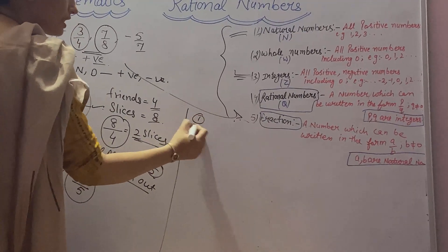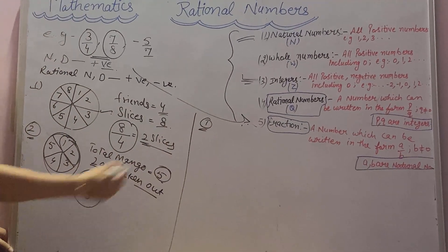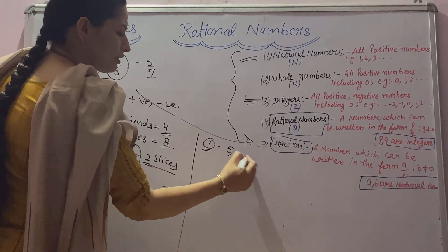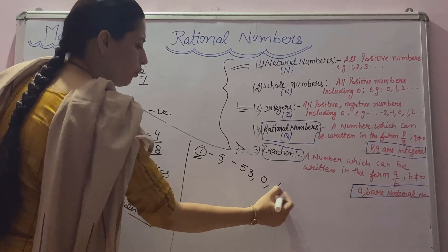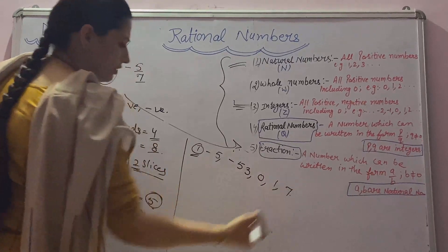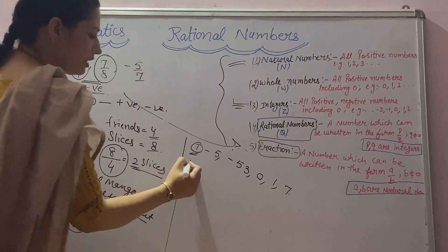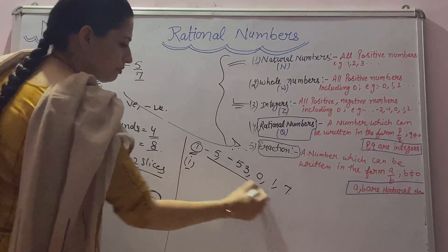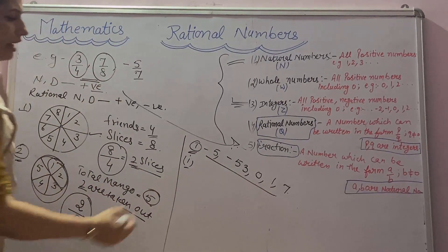Now I will give some exercises for your practice. First exercise: minus 5, minus 53, 0, 1 and 7. Tell me how many integers are here? 5, 4, 2, or 0?